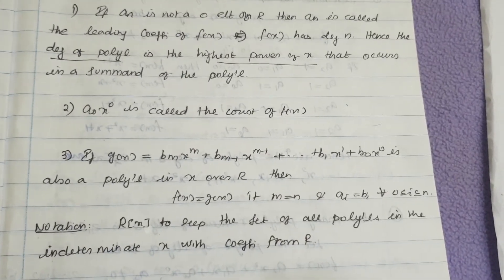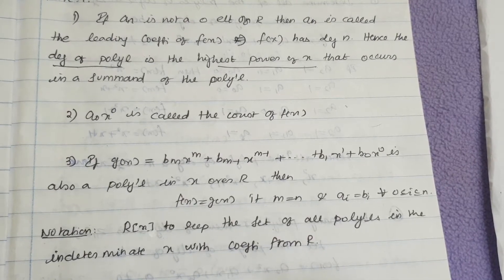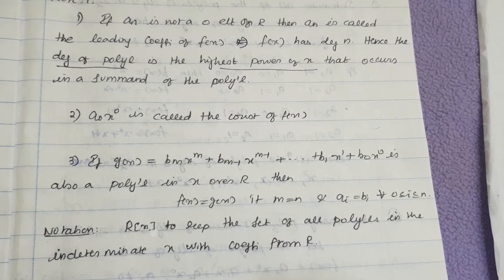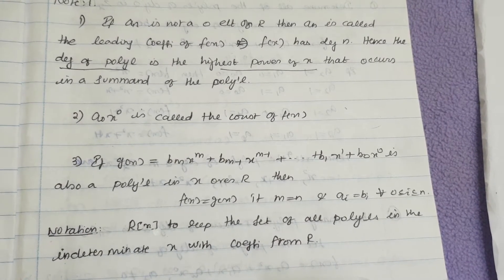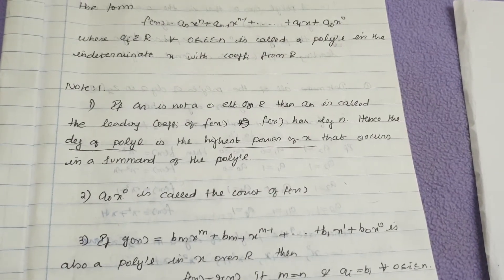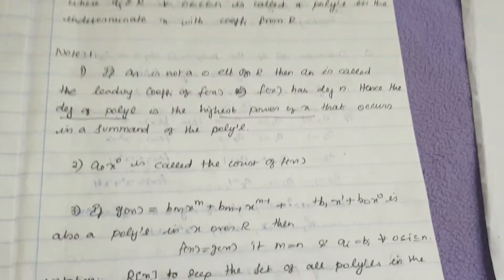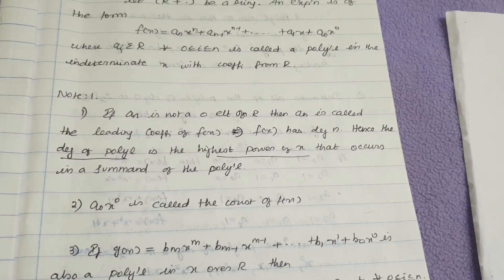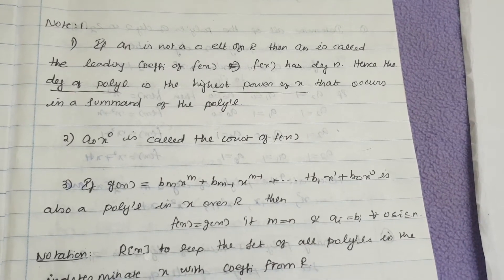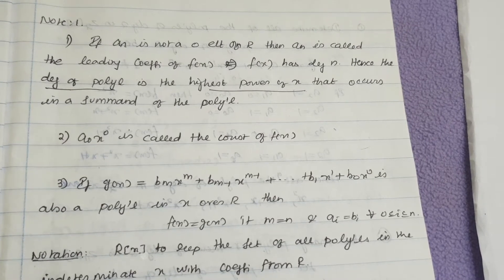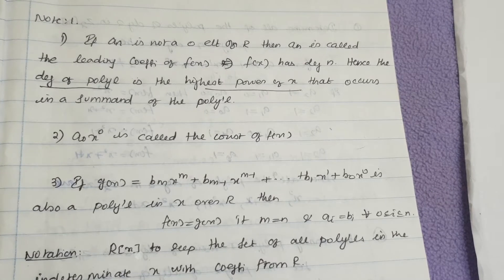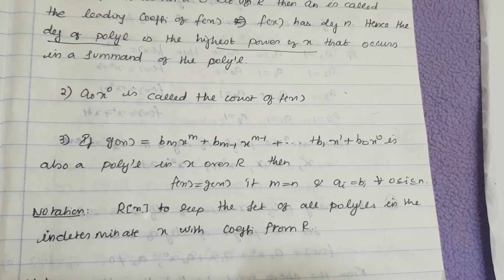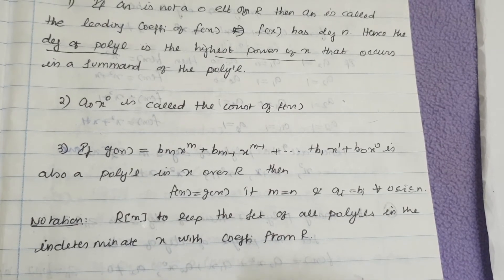The third point is: if g(x) = b_m x^m + b_{m-1} x^{m-1} + ... + b_1 x + b_0 is also a polynomial in x over R, then f(x) = g(x) if and only if m = n and a_i = b_i for every i from 0 to n. The notation R[x] is used to represent the set of all polynomials in the indeterminate x with coefficients from R.